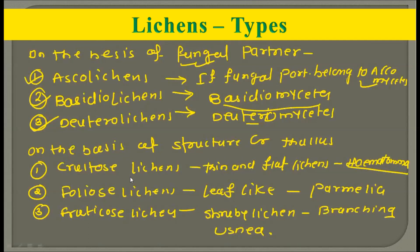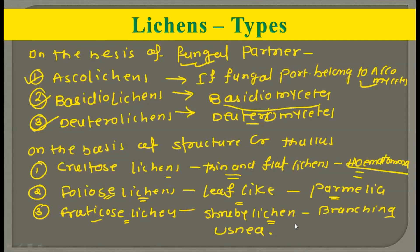To recap structural types: crustose lichens are thin and flat (example: Haematoma); foliose lichens are leaf-like (example: Parmelia); and fruticose lichens are shrub-like due to their branching (example: Usnea). You should remember both the types and the examples for each type, because if asked in the UPSC examination about the different shapes and structures found in lichens, you should be able to mention these types along with their examples.